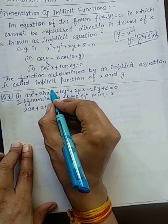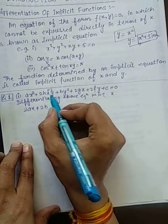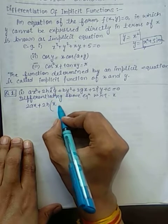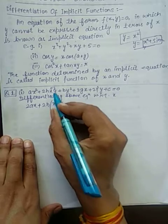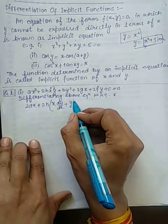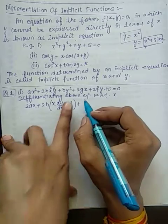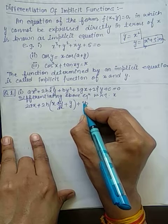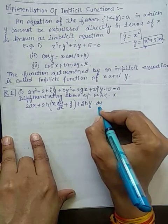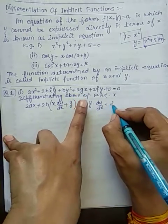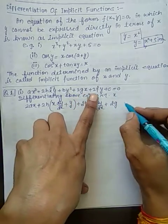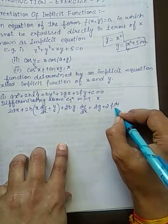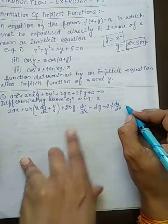Plus 2h, aapke kya hai yeh dhyan rakhna hai, x or y yeh functions hai do, to yahan par product rule lagega. X as it is, y ka derivative dy/dx plus y as it is, derivative of x is 1. Plus b is constant, derivative of y² is 2y·dy/dx plus 2g·x ka derivative 1 plus 2f·y ka derivative dy/dx.